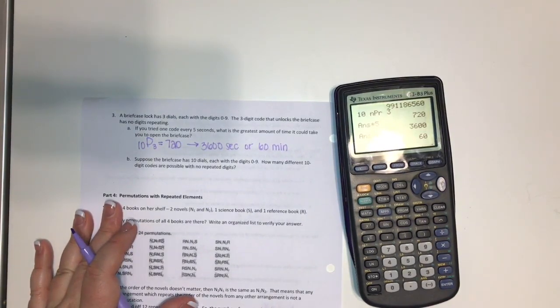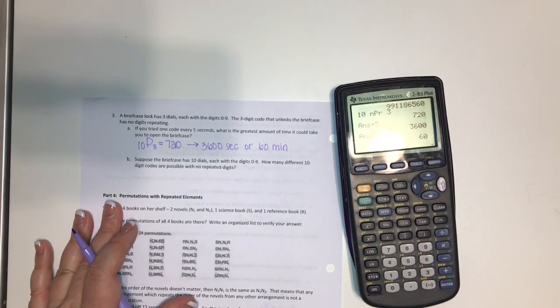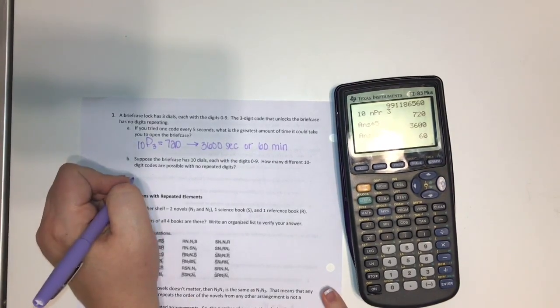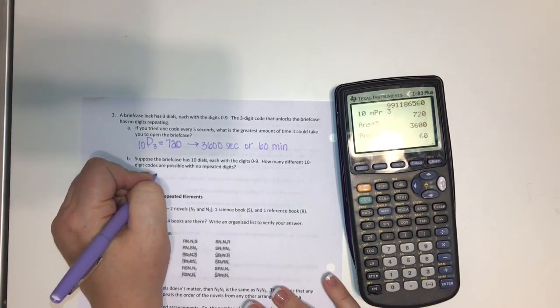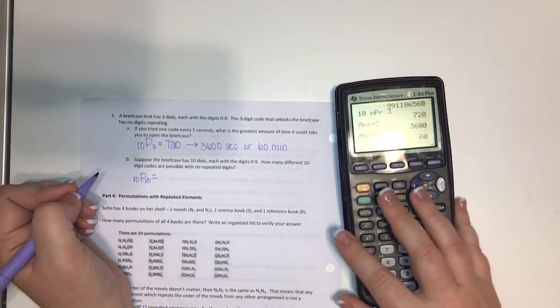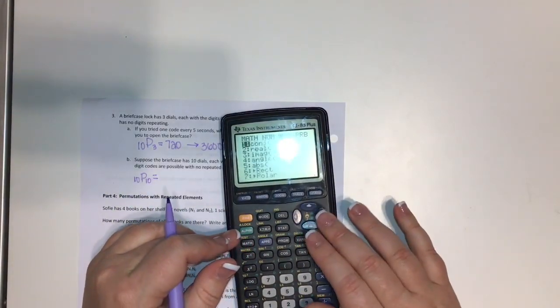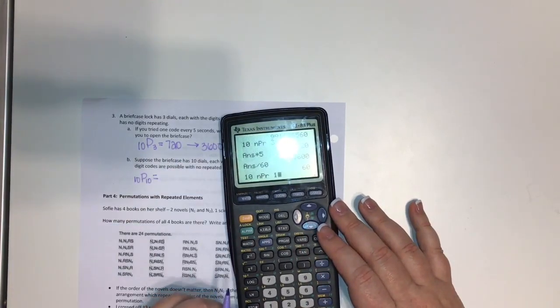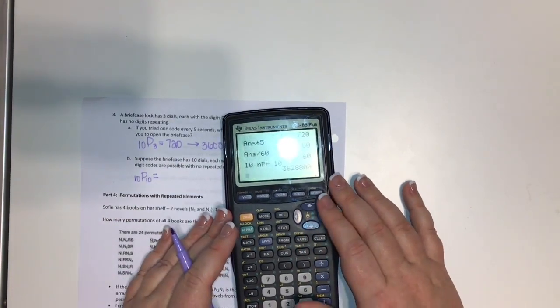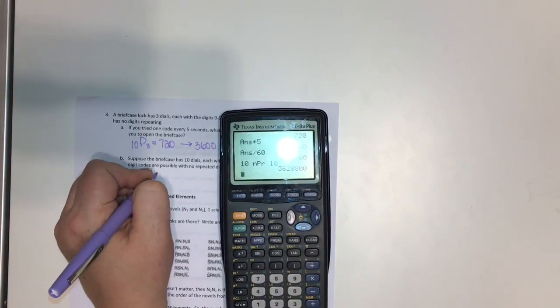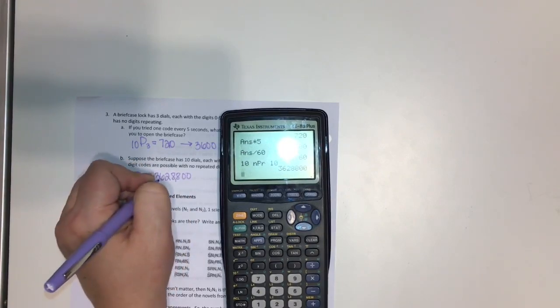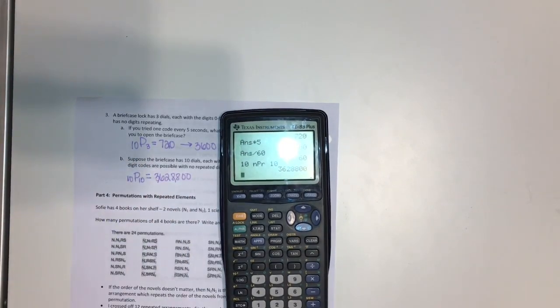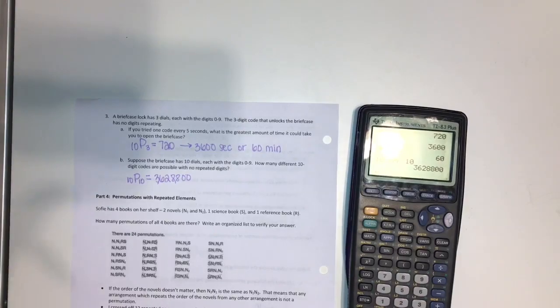Suppose the briefcase has 10 dials, each with a digit 0 through 9. How many different 10 digit codes are possible with no repeated digits? So this would be the same thing. The difference is the number of choices that I'm making is 10. So we would put this in our calculator 10 NPR 10 and that gives us a lot more permutations. It gives me three million six hundred twenty eight thousand eight hundred total.